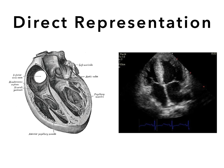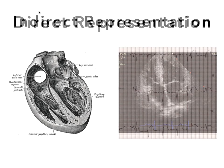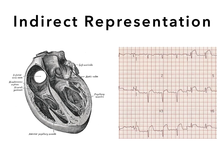So instead of seeing a direct ultrasound anatomic representation of the structure of interest — say like the heart — what we're seeing is an indirect representation of the lung, in the same way that an electrocardiogram provides an indirect representation of the heart.